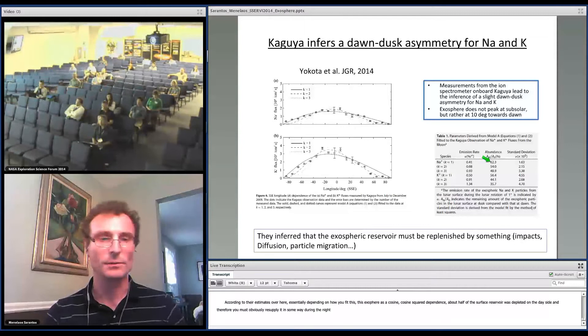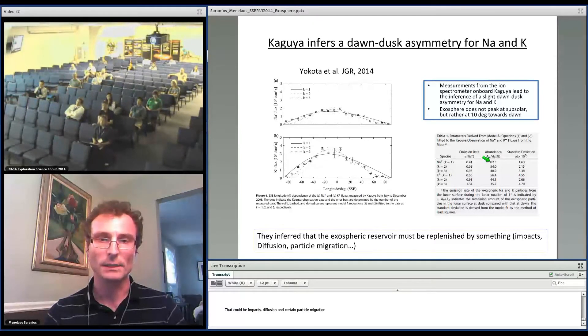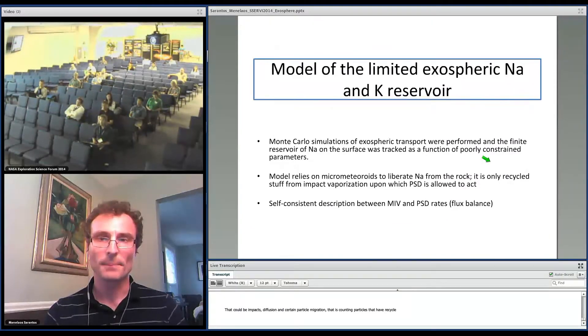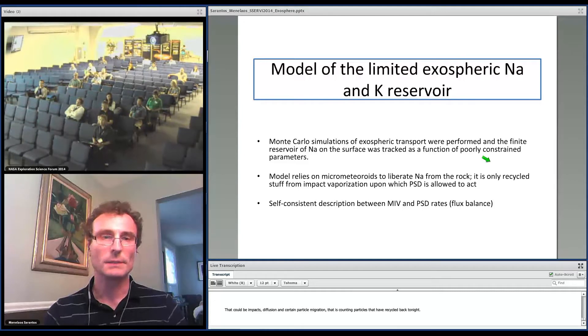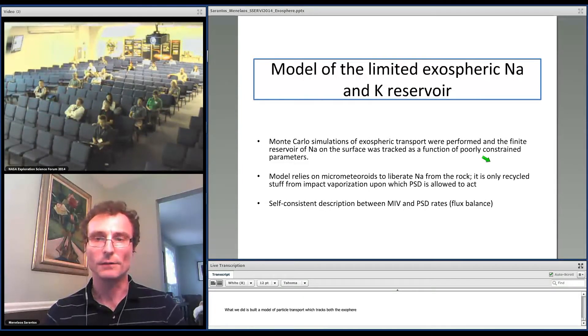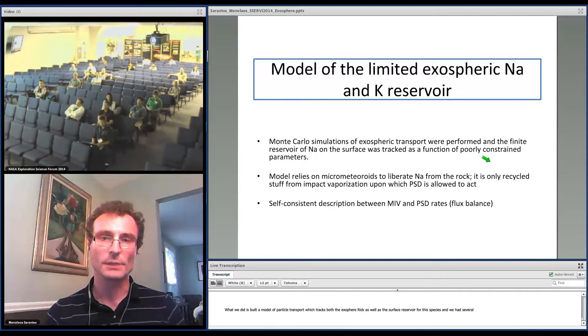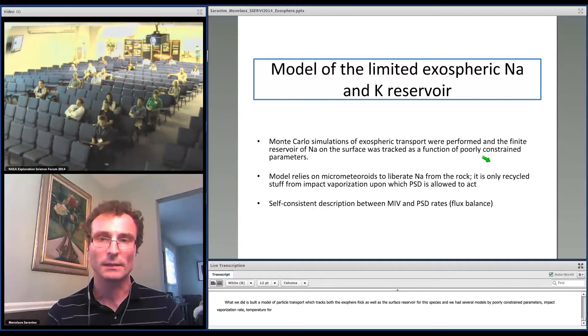And therefore you must obviously resupply it in some way during night. That could be impacts, diffusion, and certainly particle migration—counting particles that have recycled back to night. So what we did is build a Monte Carlo model of particle transport which tracks both the exospheric as well as the surface reservoir for this species.